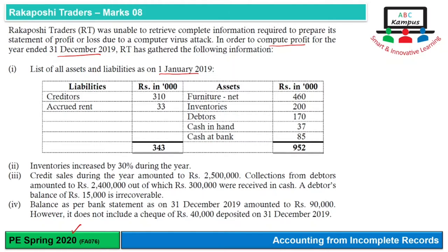Inventories increased by 30% during the year. Credit sales during the year amounted to 2.5 million. Collection from debtors amounted to 2.4 million, out of which 300,000 were received in cash.